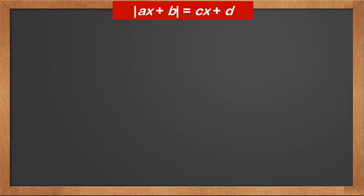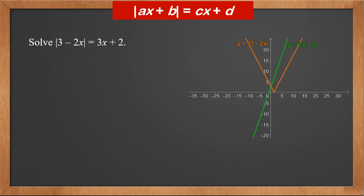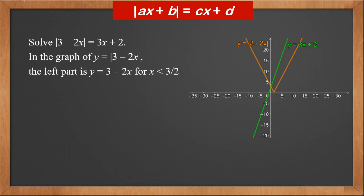For the second type, there could be one solution only. For example, solve the modulus of three minus two x equals three x plus two. First we sketch the graph of both sides. Y equals the modulus of three minus two x is a v-shape and touches the x-axis at three over two. The left part is three minus two x for x less than three over two. Therefore, we solve three minus two x equals three x plus two. The solution is x equals one-fifth. It is less than three over two, so it's valid.